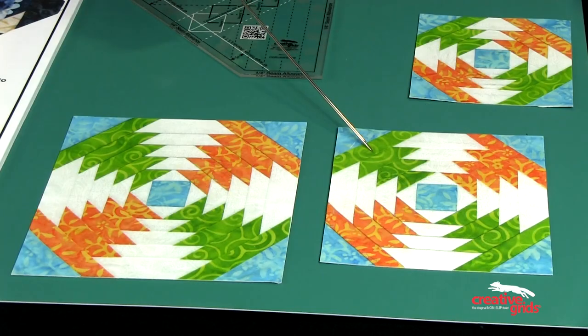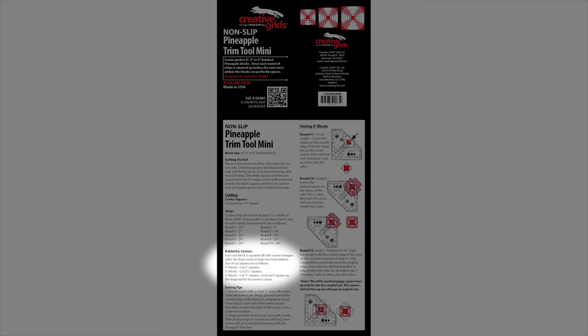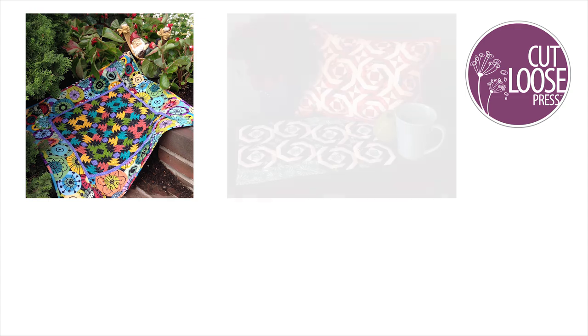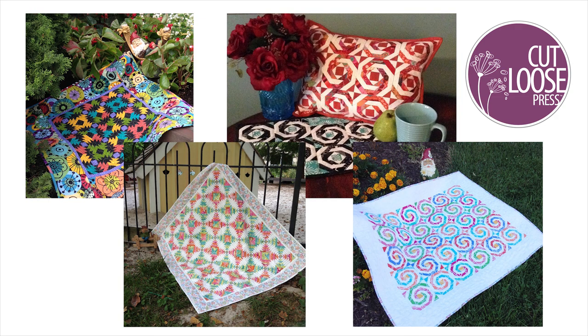The larger five and six inch blocks require larger corner triangles, but those dimensions are listed in the instructions provided with the ruler. To get started with your first project, look for a variety of Cut Loose Press patterns that are available for this tool.